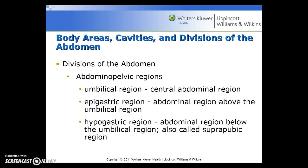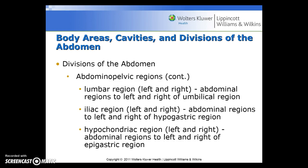The abdominopelvic regions include: the umbilical region — the central abdominal region; the epigastric region — the abdominal region above the umbilical region; the hypogastric region — the abdominal region below the umbilical region, also called the suprapubic region; the lumbar regions (left and right) — to the left and right of the umbilical region; the iliac regions (left and right) — to the left and right of the hypogastric region; and the hypochondriac regions (left and right) — to the left and right of the epigastric region.